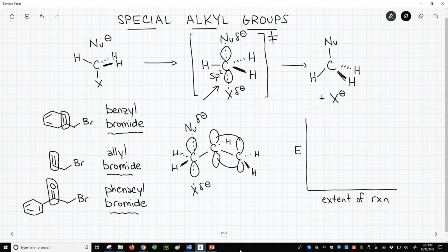The interaction of the p orbital in our electrophilic carbon will get some type of overlap with these neighboring pi bonds. This interaction of the p orbitals stabilizes the transition state.